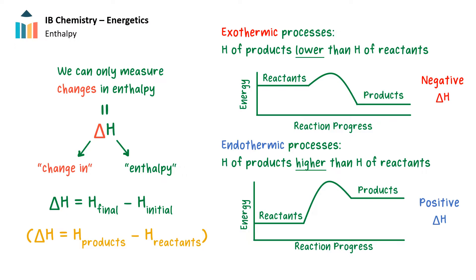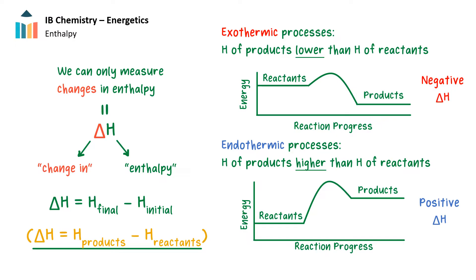So, how does the enthalpy change during an endothermic process and an exothermic process? An exothermic process is one that gives off energy in the form of heat. This means that the energy of the products will be lower than the energy of the reactants, since heat is lost. The change in enthalpy is equal to the final enthalpy minus the initial enthalpy, or the product enthalpy minus the reactant enthalpy. Since that product enthalpy is lower, the enthalpy change for an exothermic reaction is always negative. Endothermic reactions absorb energy in the form of heat, so the enthalpy of the products is higher than the enthalpy of the reactants, and this means that the change in enthalpy will be positive.